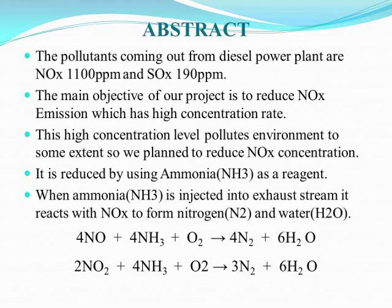Let us see the abstract of this project. We are going to do a project regarding diesel power plant emission control of pollutants. The pollutants coming out from the diesel power plant are NOx, which is 1100 ppm, and SOx, which is 190 ppm. The main objective is to reduce NOx emission, which has a high concentration rate. This high concentration level pollutes the environment, so we plan to reduce NOx concentration using ammonia as a reagent.